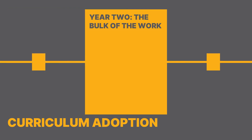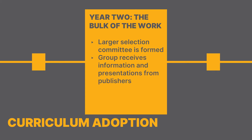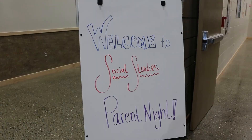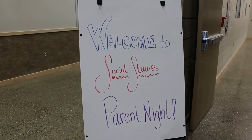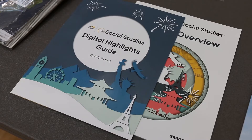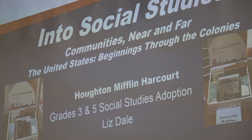Year two of the process is when the bulk of the work is done to develop the recommendation. What was a small group becomes a much larger group. We ensure that all grade levels in all school buildings have representation on this larger selection committee. The larger group receives information and presentations by publishers, applying the selection criteria to determine the materials that will best meet the students' and teachers' instructional needs. Once materials have been considered, they are previewed by parents, with the teachers presenting the rationale for the materials that have been selected. Parents are invited to review the materials and to provide comment and approval. The goal of this process is transparency and consideration of a variety of points of view.